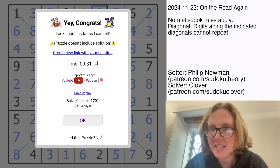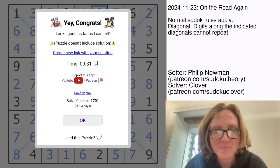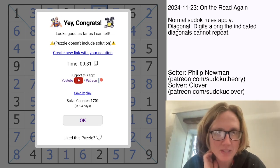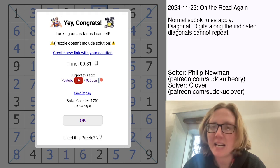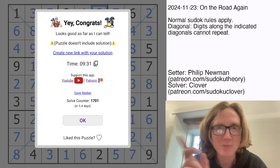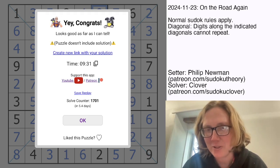Fantastic! That is how you solve Philip Newman's On the Road Again, diagonal Sudoku. Hope you enjoyed that one. The link to check it out yourself is in the description of this video below. And I will see you again, actually not in three days, but right after this video because I have one more I need to catch up on to get back on track. See you soon.